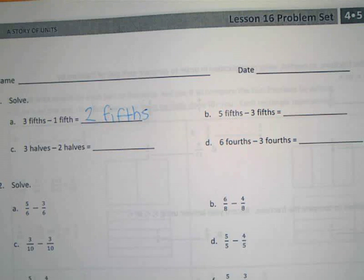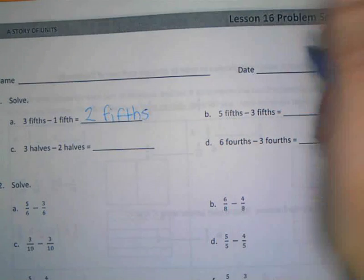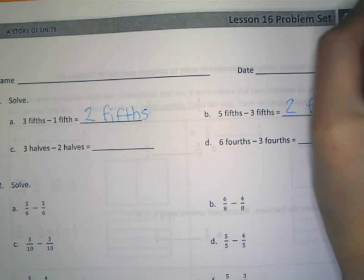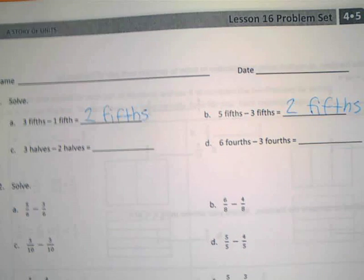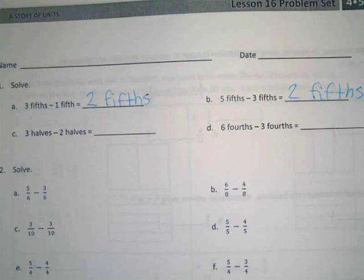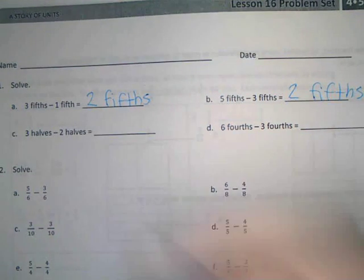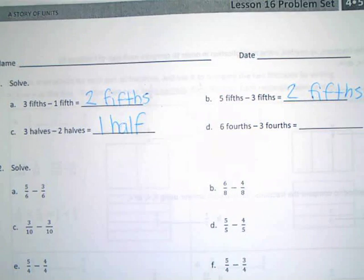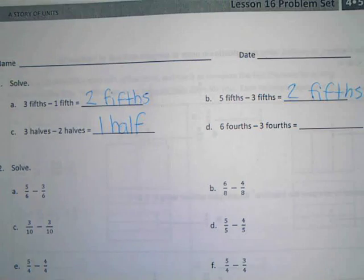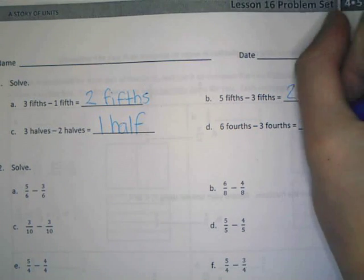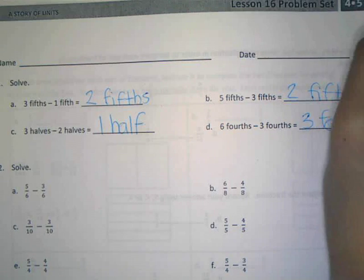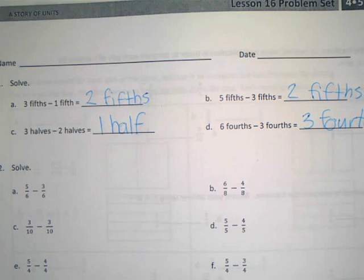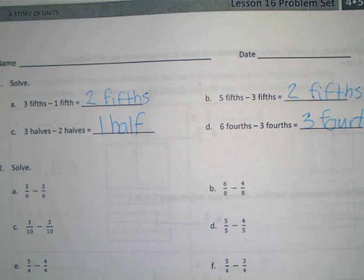Easy enough? Easy. All right, B, five-fifths take away three-fifths. Two-fifths. Three-fifths take away two-fifths. One-half. Six-fourths take away three-fourths. Three-fourths. So this is easy-peasy, right? I could change this to anything, like we did earlier. I could say six popsicles take away three popsicles is? Three popsicles. So as long as the units are the same, we can do it, right?